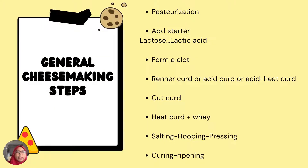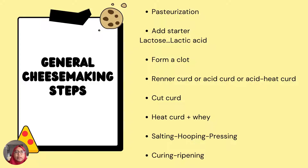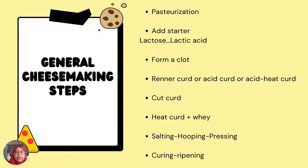The general cheese-making steps are: first, pasteurize the milk, then add the starter culture so that it will produce acid from lactose and form a clot. Then rennet curd or acid curd is produced when we add rennet. Then we cut the curd, heat the curd and whey, separate the whey and the curd, and take the curd for salting, hooping, and pressing. After that, we cure and ripen the cheese.